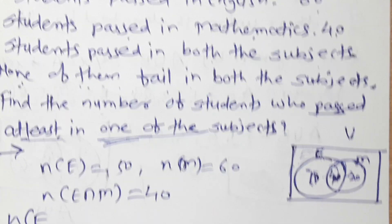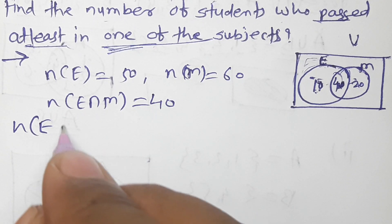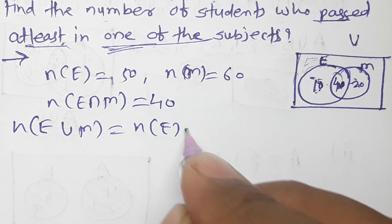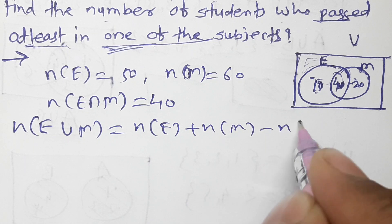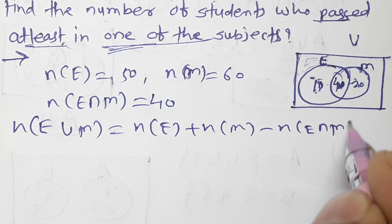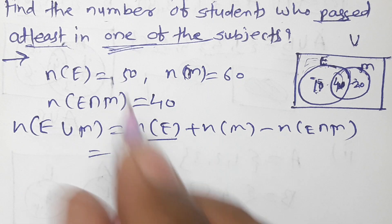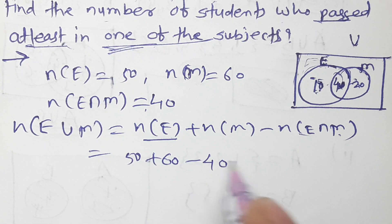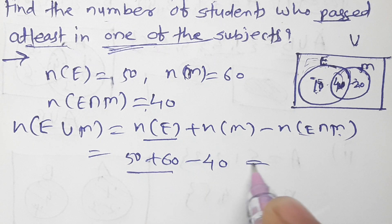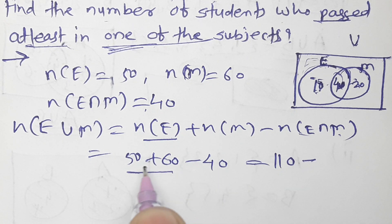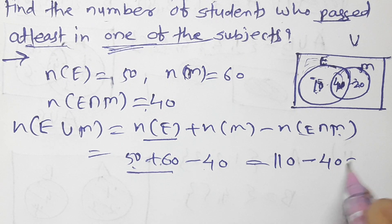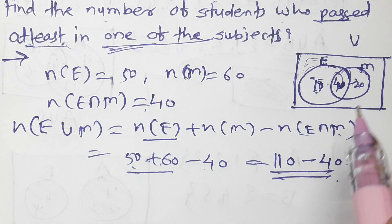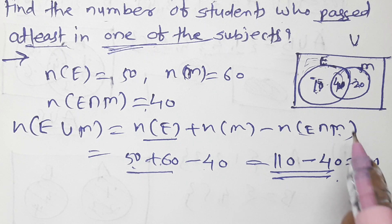Number of E union M = number of E plus number of M minus number of E intersection M = 50 + 60 minus 40 = 110 minus 40 = 70 students who passed in at least one of the subjects.